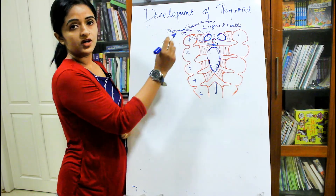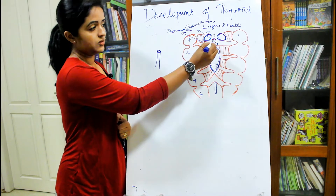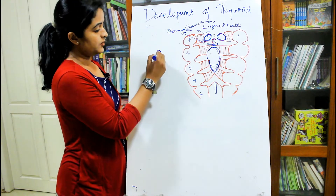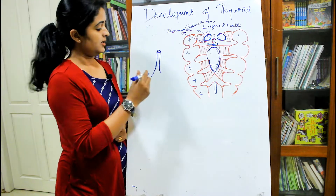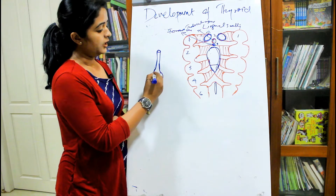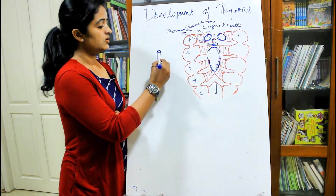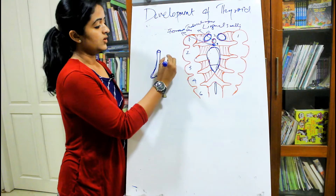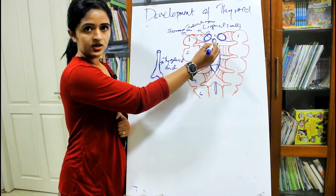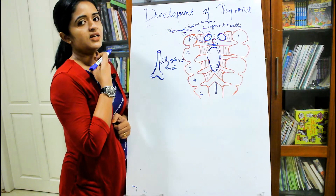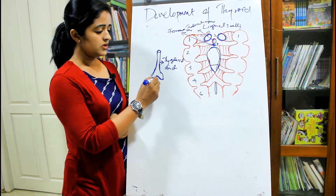At this point there is a proliferation or downgrowth through the tongue in the midline from the foramen cecum. This is an endodermal downgrowth which will lie in front of the trachea in the neck. As it reaches the neck it will divide into a bilobed mass — the lower end of this duct develops into a bilobed mass. This downward growth is known as the thyroglossal duct.